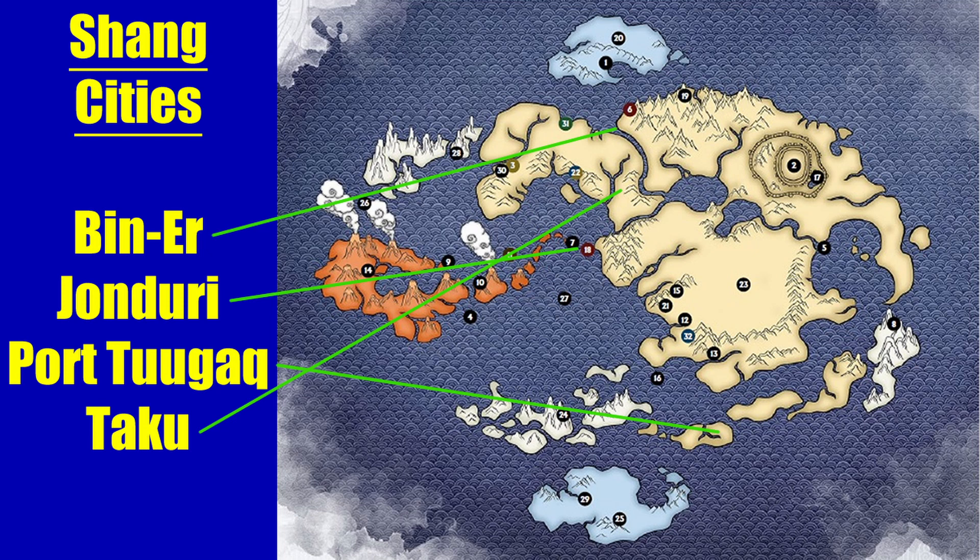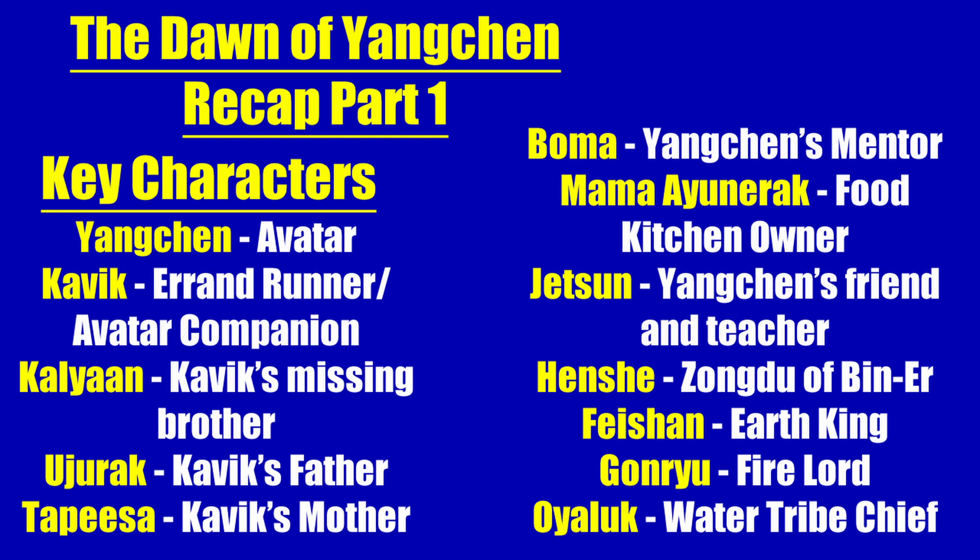For most of the video, on screen you'll just have a visual highlighting the specific characters who are in focus in each particular part of the book, so you can get a sense of their names, the spellings of their names, and so on as I go through the recap. So like I said, this one will cover the first twelve chapters of the book — let's get into it.